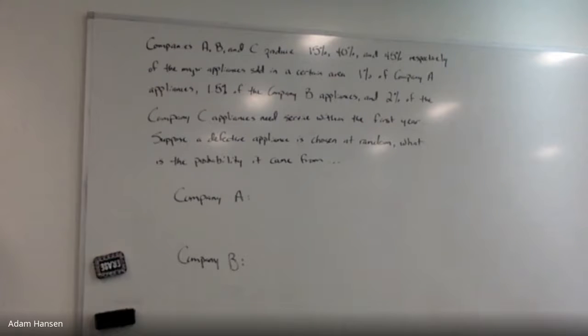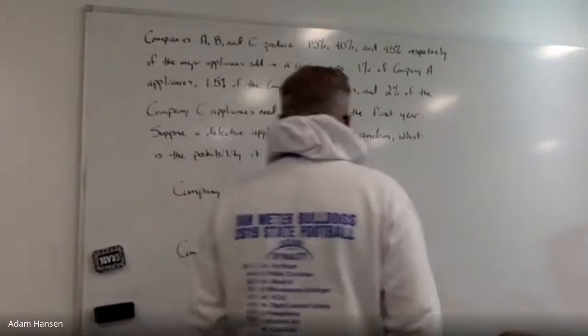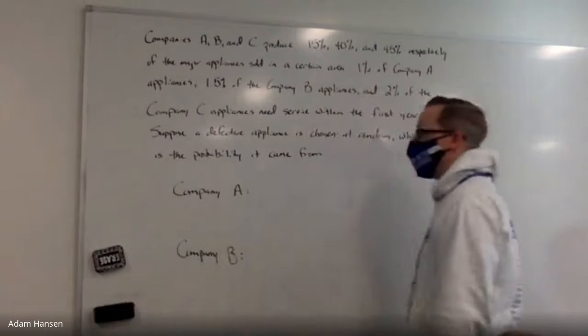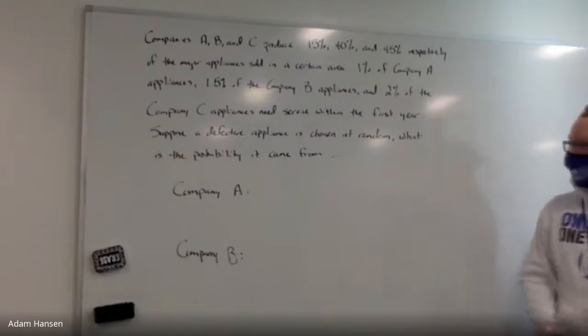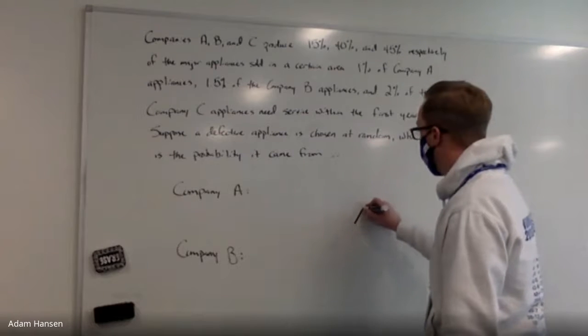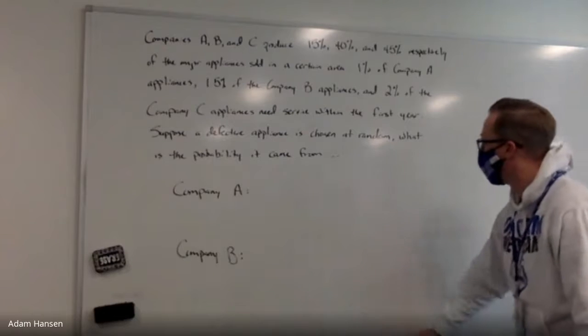Suppose a randomly selected appliance is defective. What's the chance it came from Company A, and then also Company B? What are the two different events that this scenario is describing? Appliances produced by how many different companies? Three.